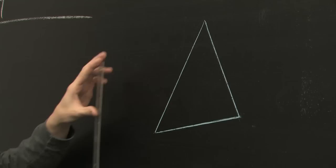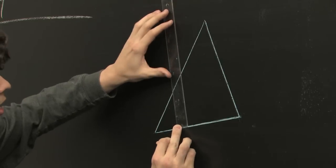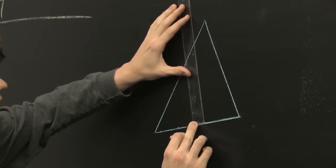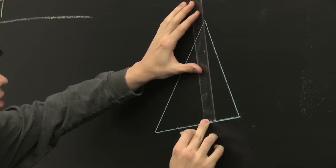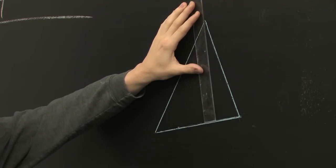So the altitude of a side is a line segment that forms a right angle with the side and that also intersects the opposite vertex.